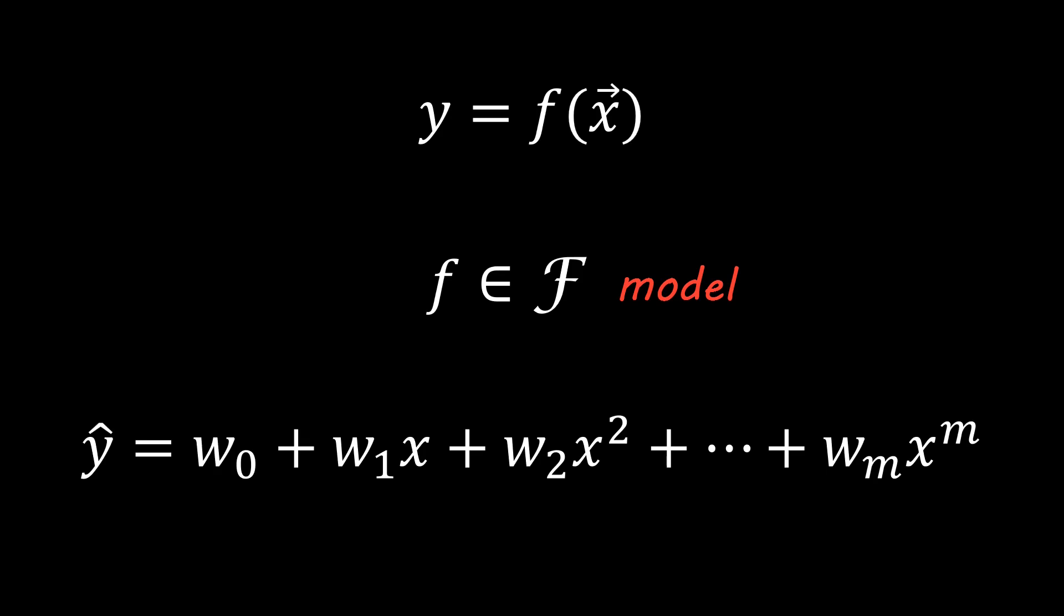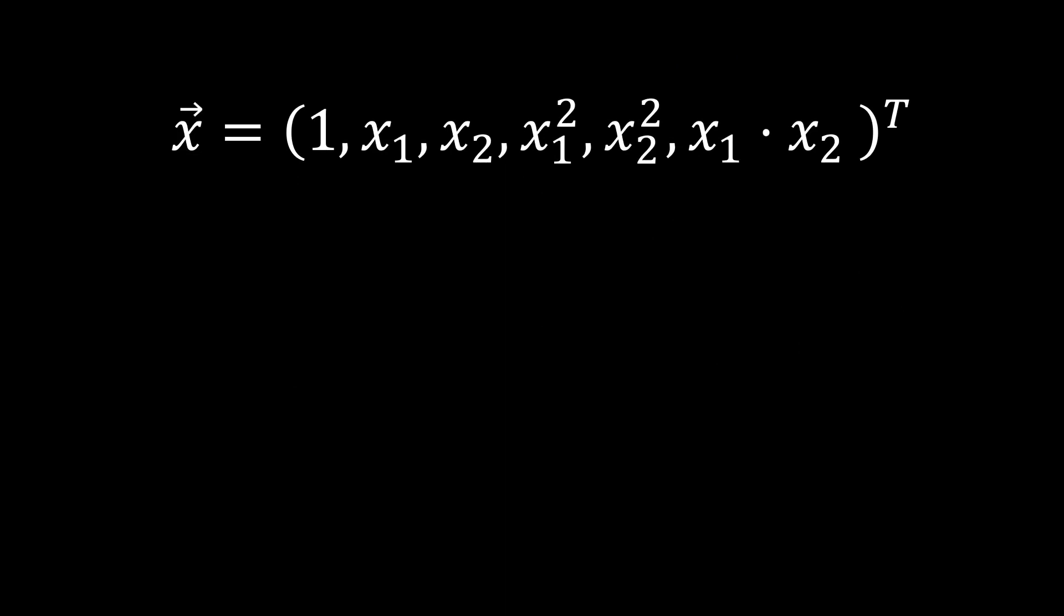For polynomial regression with multiple inputs, we also have to account for the multiplicative interactions between features by adding corresponding terms like here. In general, for polynomial regression with degree m and input dimension d, we have d plus m minus 1 choose m features.